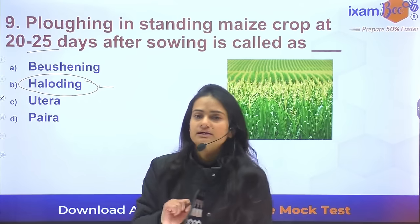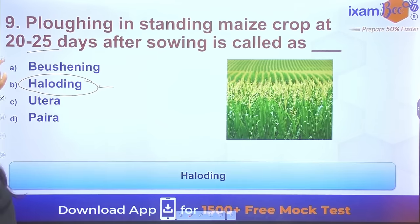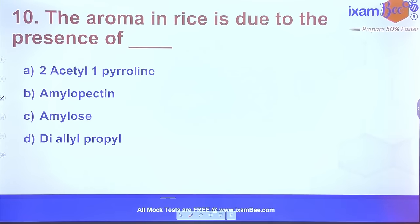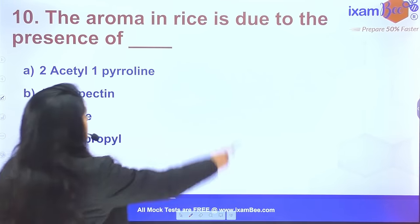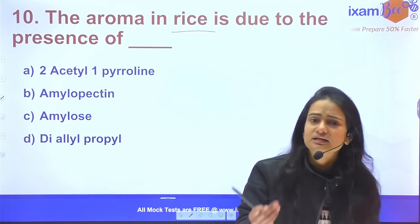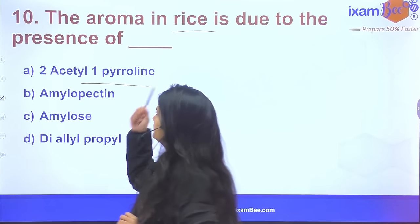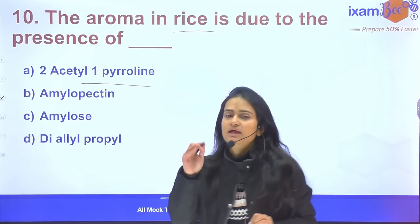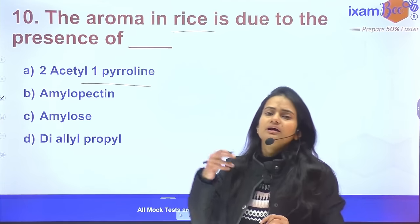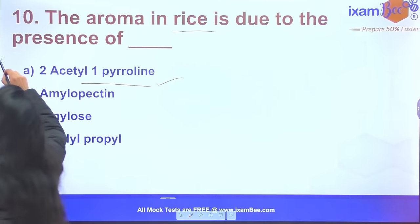The next question concerns aroma in rice — what is it due to? The aroma in rice is due to the presence of 2-acetyl-1-pyrroline (diacetyl pyrroline). This compound is responsible for the characteristic fragrance.